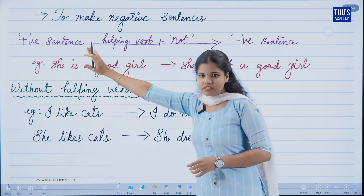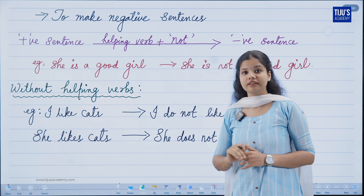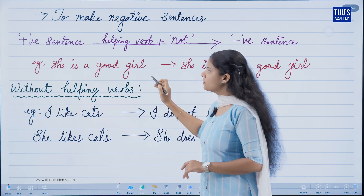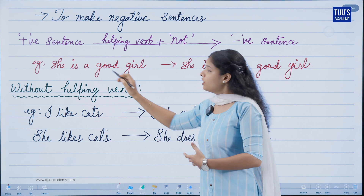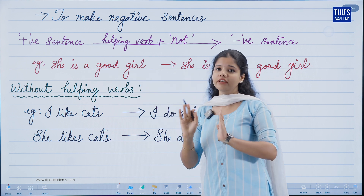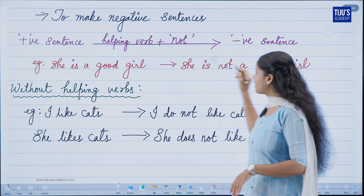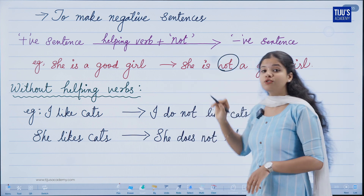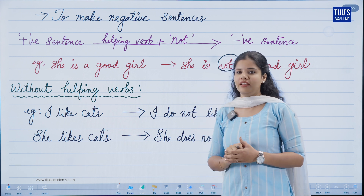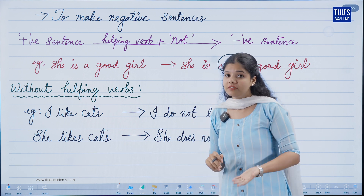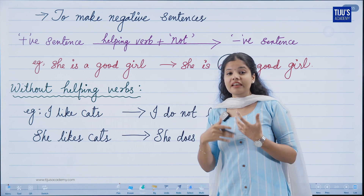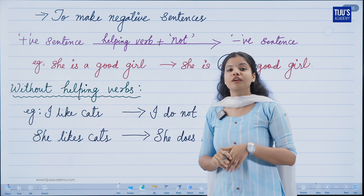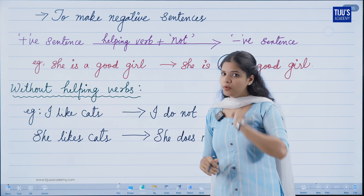If we have a positive sentence, we add a helping verb with 'not' to make it negative. For example, 'she is a good girl' is a positive sentence. What do we do to make it negative? We say 'she is not a good girl.'